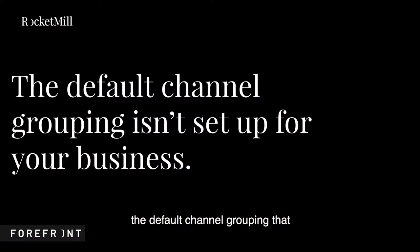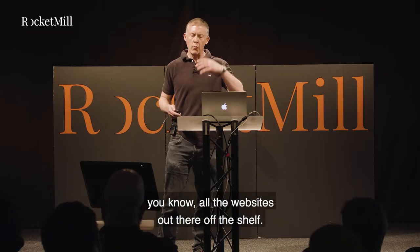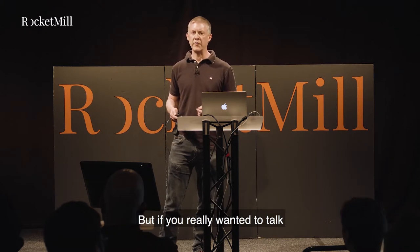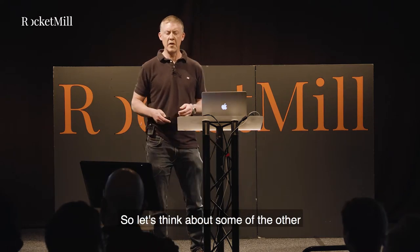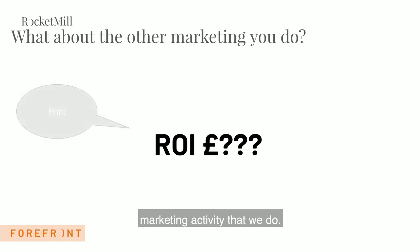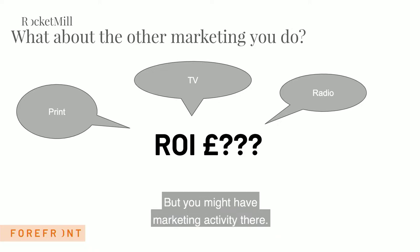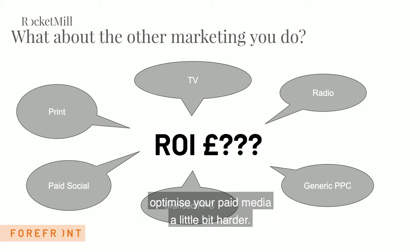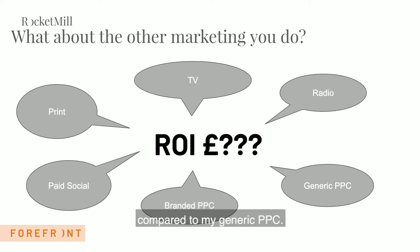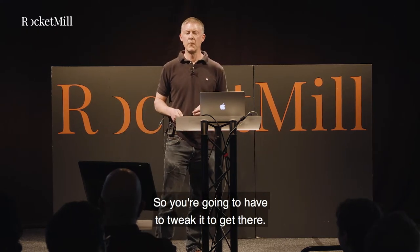The real issue here is that the default channel grouping in Google Analytics isn't set up specifically for you. Google's done a great job sorting it out off the shelf for all websites, but if you really want to attribute properly to your business, you're going to have to roll your sleeves up and customize it yourself. Think about other marketing activity — print, TV, radio — there's probably no channel set up for that. What about paid social? No channel for that either. And what if you want to compare branded search to generic PPC? That's not set up for you.